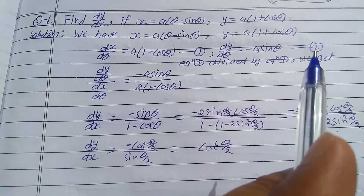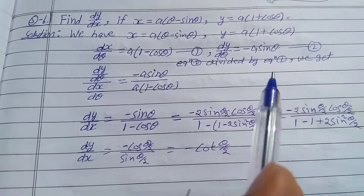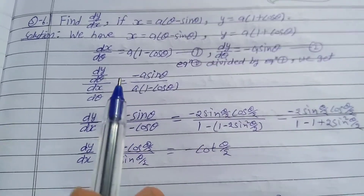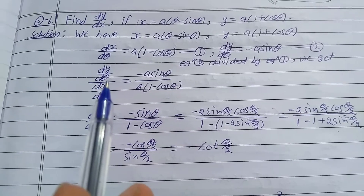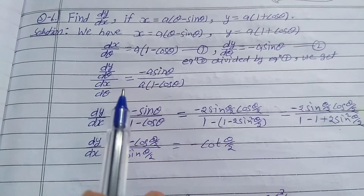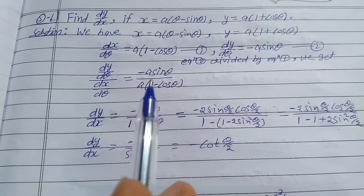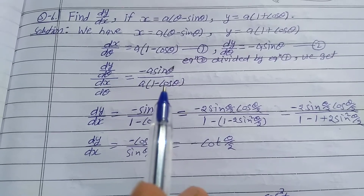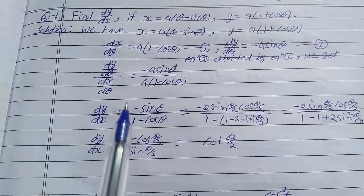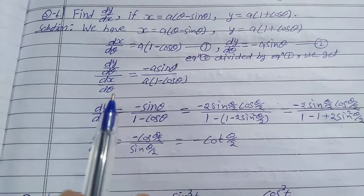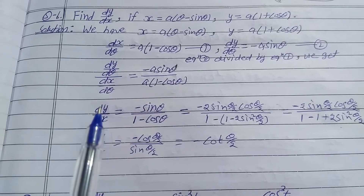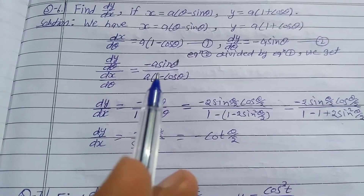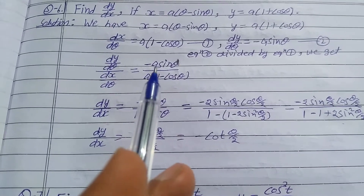Divide equation second by equation first: (dy/dθ) / (dx/dθ) = (-a sinθ) / (a(1 - cosθ)). The dθ cancels, and a cancels, so dy/dx = -sinθ / (1 - cosθ).